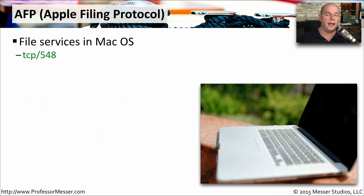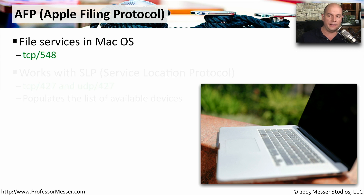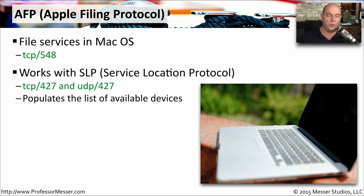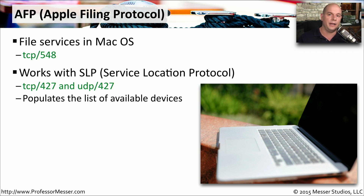macOS has similar protocols for file sharing and printing. The Apple Filing Protocol, AFP, commonly runs on TCP port 548. The Service Location Protocol, SLP, works in conjunction with AFP and runs on TCP port 427 and UDP port 427. SLP populates the list of devices on the network, making it easy to find printers and file services.